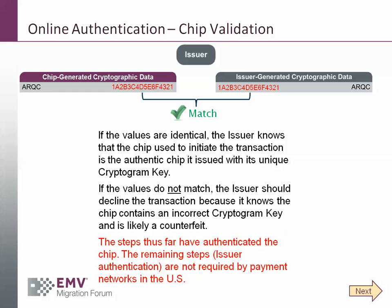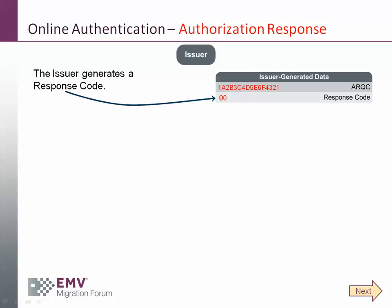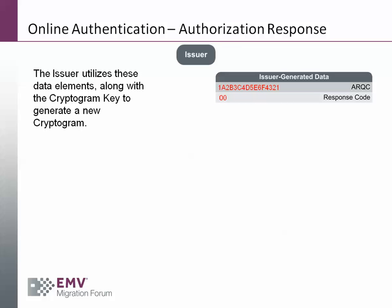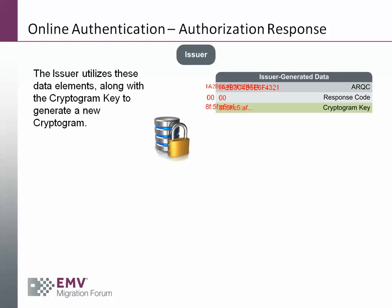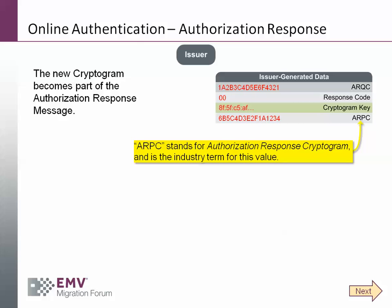The steps discussed thus far have authenticated the chip. The remaining steps are focused on issuer authentication, and they are not required by payment networks in the United States. The first step in this process is for the issuer to generate a response code — in this case, the issuer is going to approve the transaction. The issuer will then utilize the cryptogram key along with the other data elements to create a new cryptogram, which will be different than the first because different data elements were used. This cryptogram becomes known as the ARPC — the Authorization Response Cryptogram. It becomes part of the authorization response message.